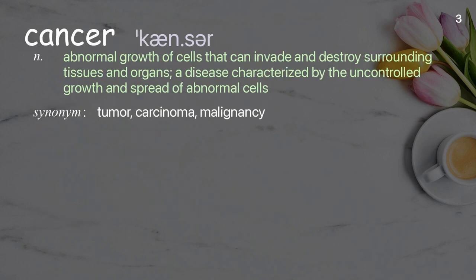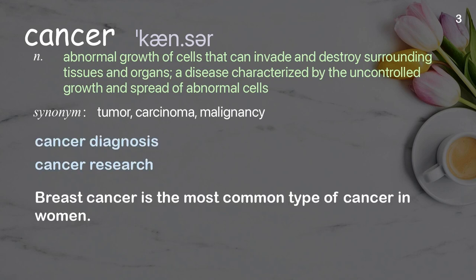Cancer. Abnormal growth of cells that can invade and destroy surrounding tissues and organs — a disease characterized by the uncontrolled growth and spread of abnormal cells. Examples: cancer diagnosis, cancer research. Breast cancer is the most common type of cancer in women.